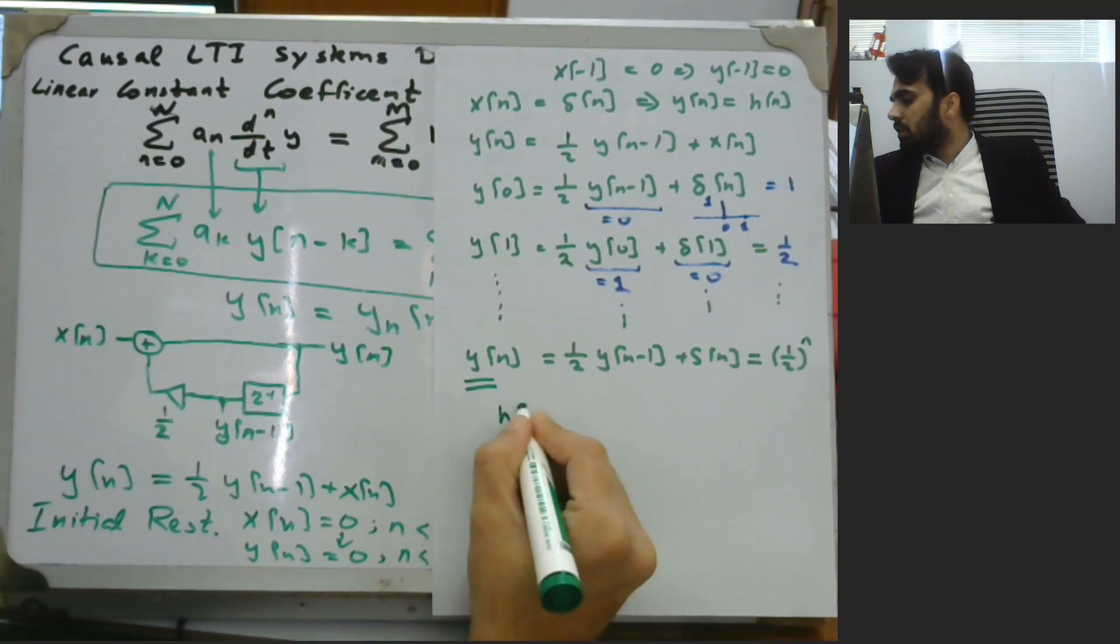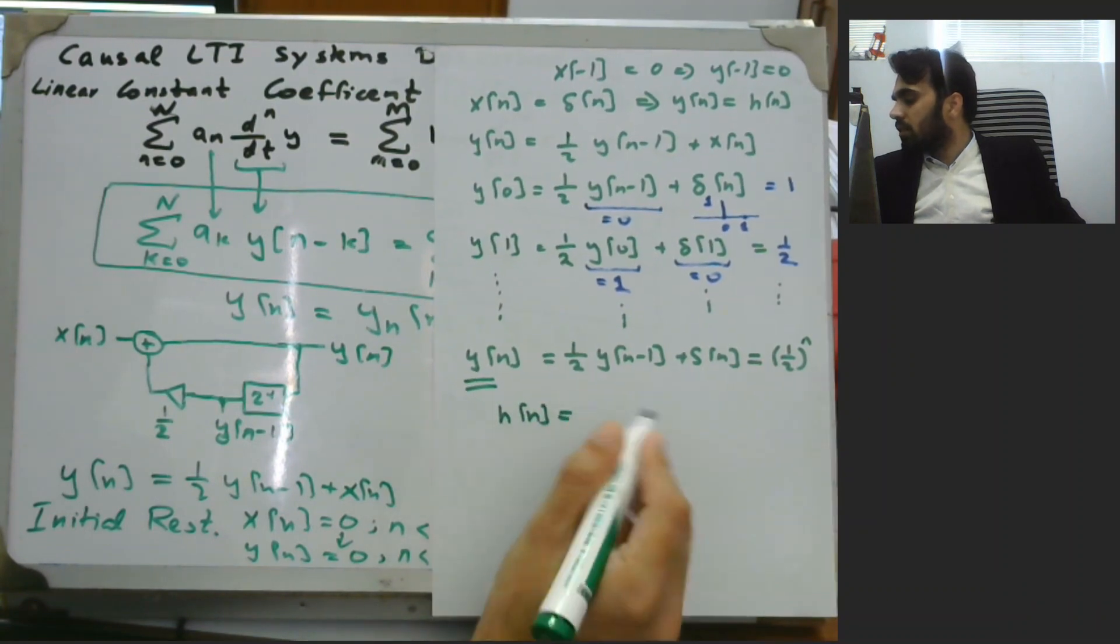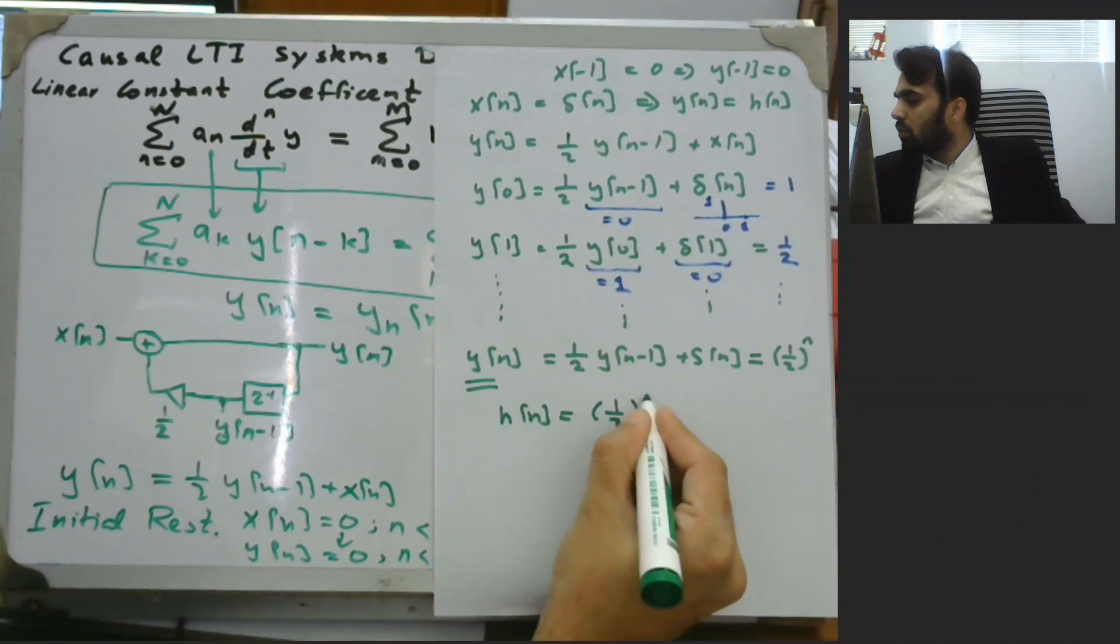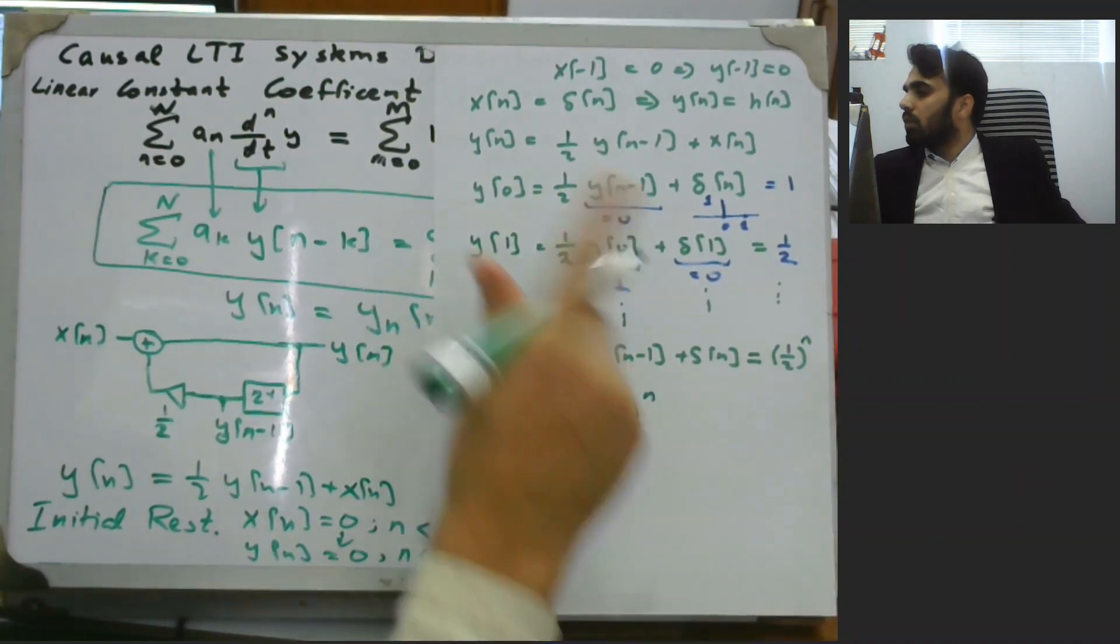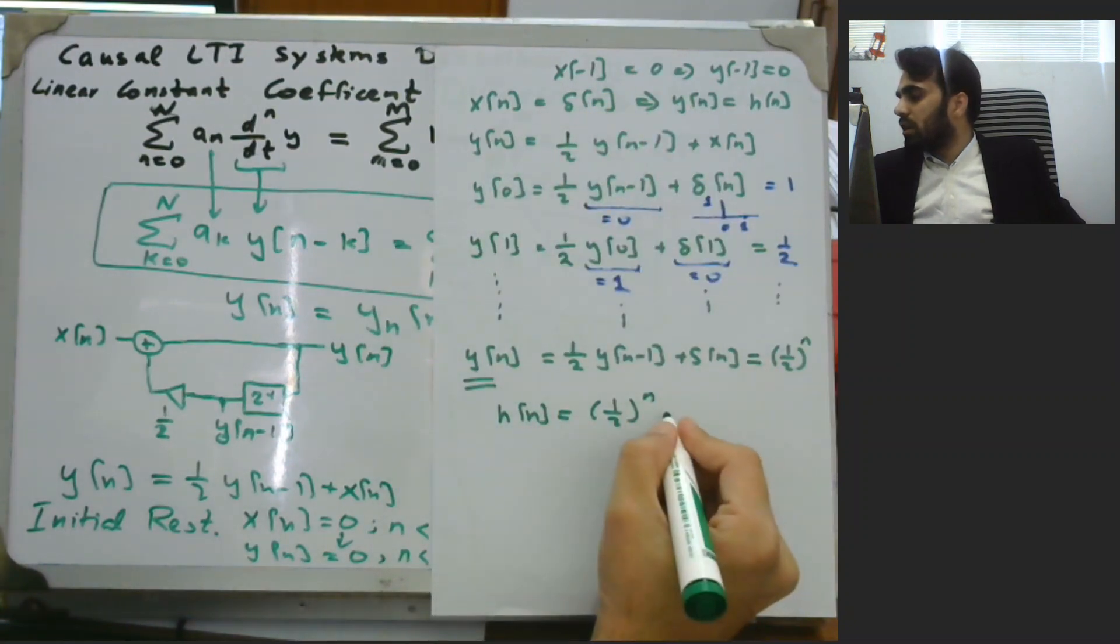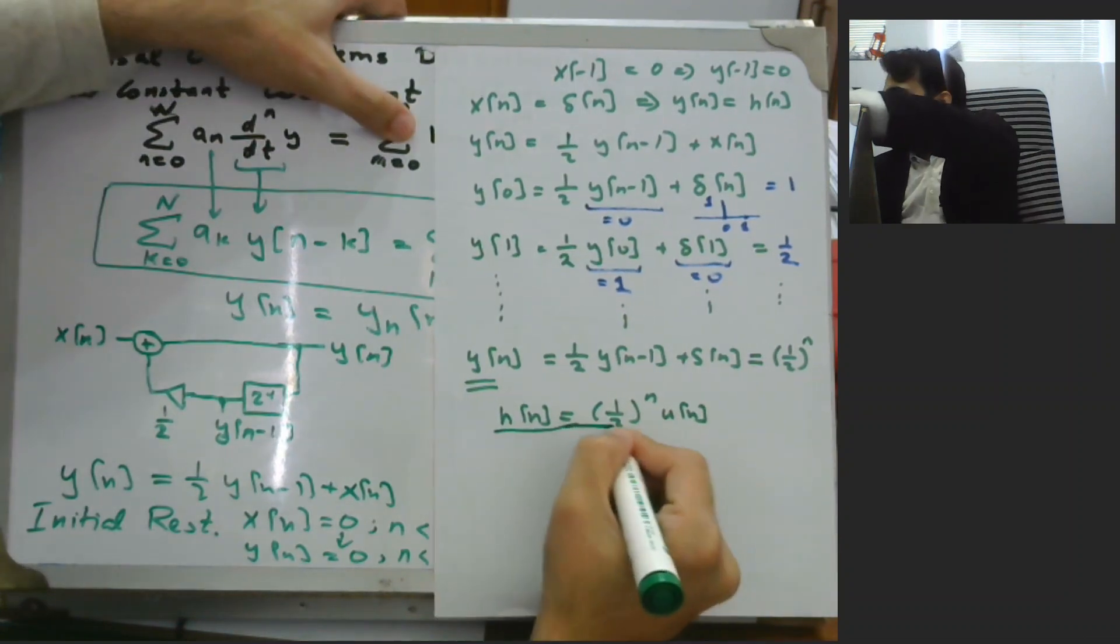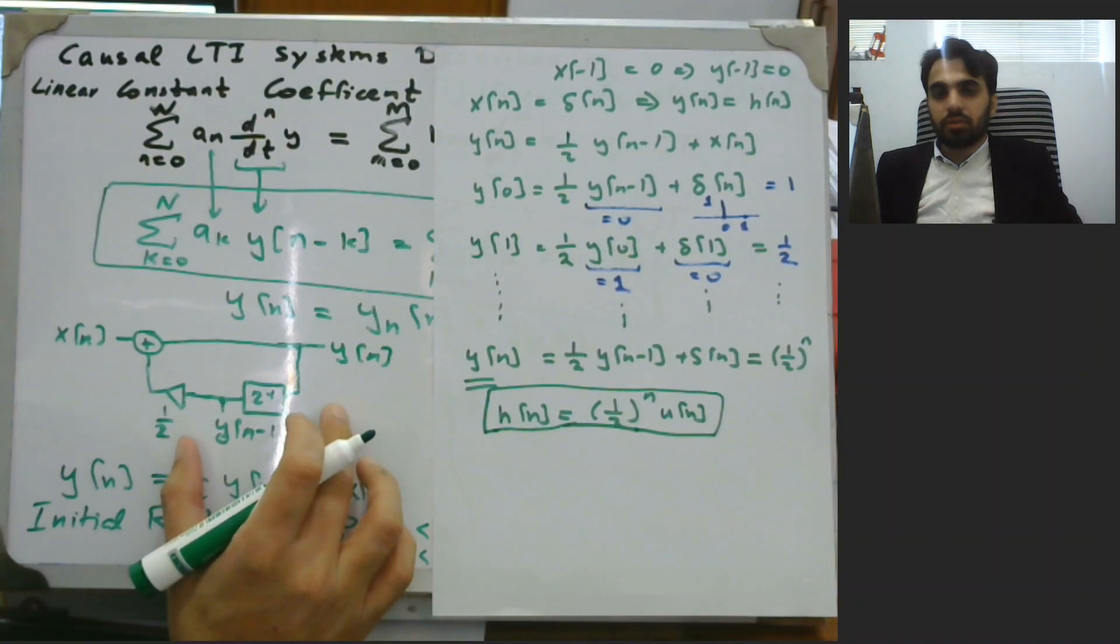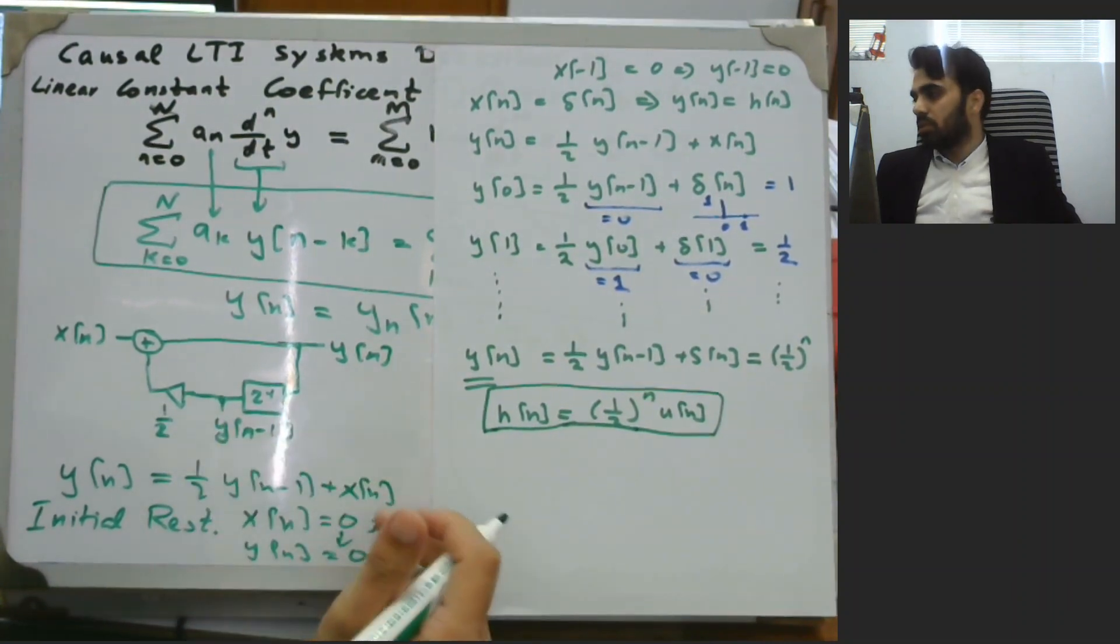From here we can say that the impulse response h of n is equal to (1/2)^n for n greater than or equal to 0. So we can have u of n written over here. So this is the impulse response of our system mentioned over here, that is the first order difference equation.